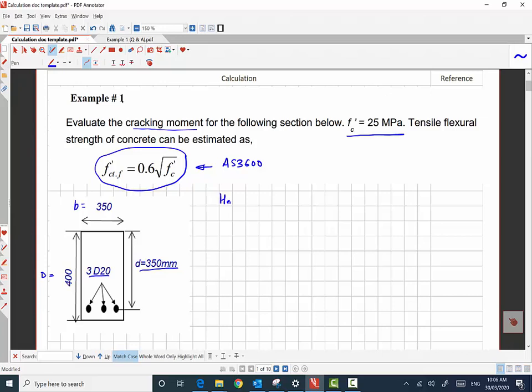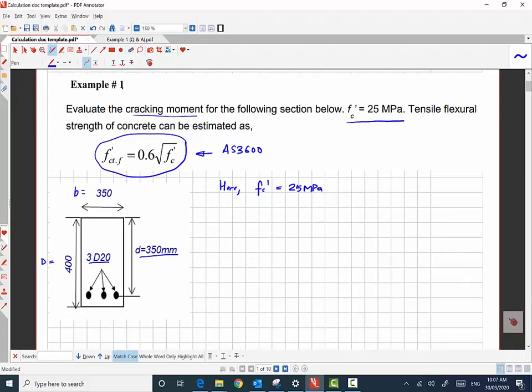So here the compressive strength of concrete is given as 25 megapascal and now using the empirical formula we can find out the tensile strength of concrete, that is f dash ct dot f.